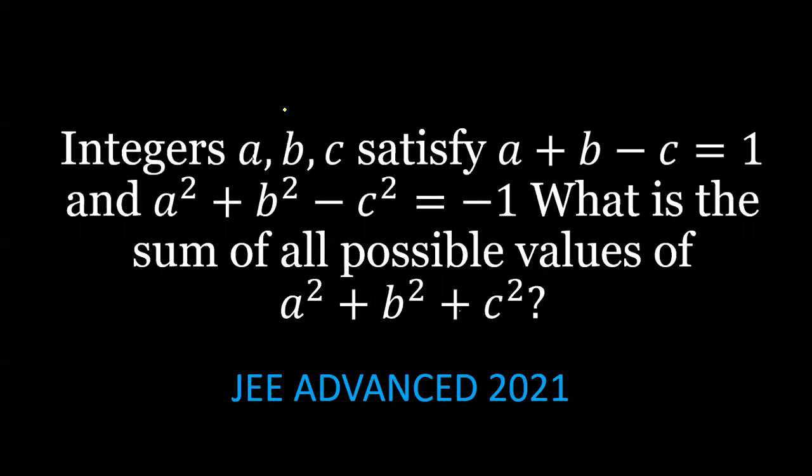The problem is that integers a, b and c satisfy certain conditions, and we need to find the sum of all possible values of a square plus b square plus c square. Here we have the first condition: a plus b minus c is equal to 1.